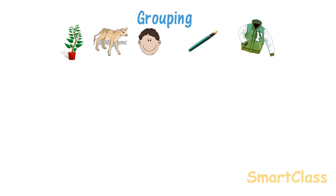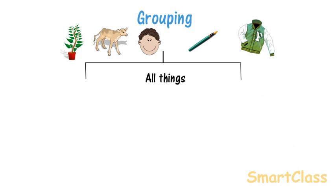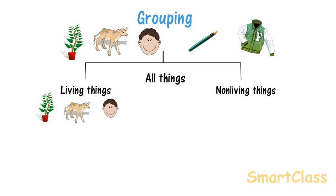All the things that have life are placed under the group of living things, and all those without life are placed under the group of non-living things. Living things are divided into major groups like plants and animals.